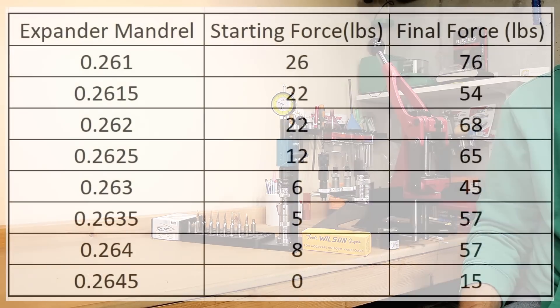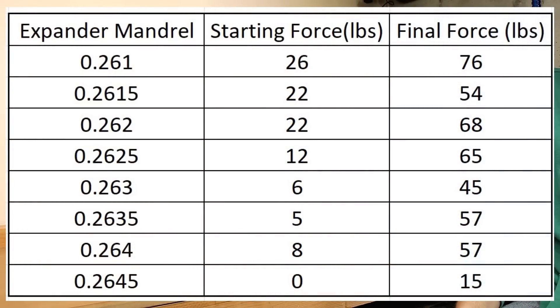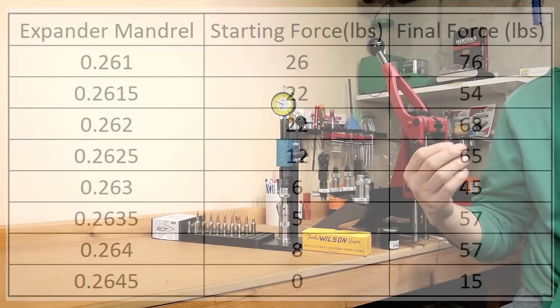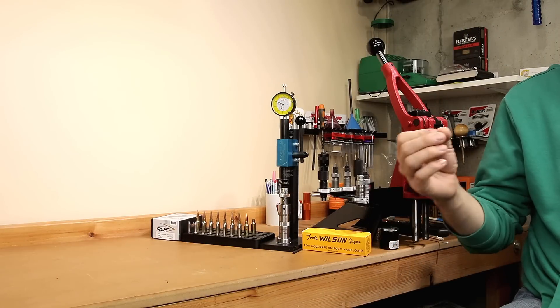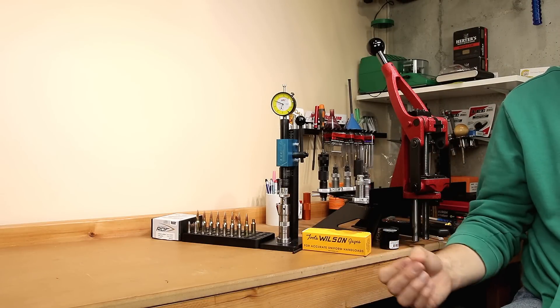Now, if we were to chart this data, I'm not sure exactly how much it's going to tell us, but hopefully it illustrates to what these numbers look like at varying levels of neck tension. Going forward, I will try and correlate these numbers to the actual velocity variation that we see with our reload tests.